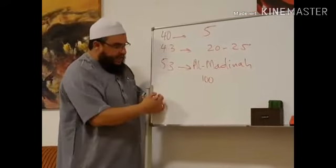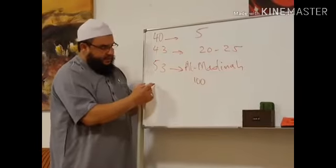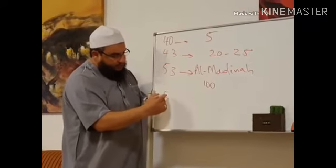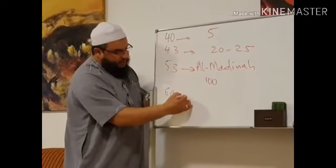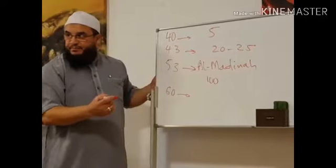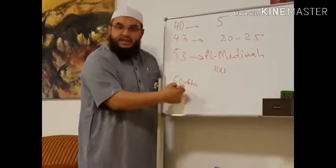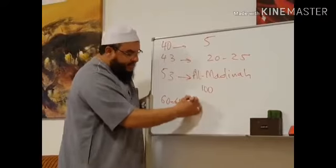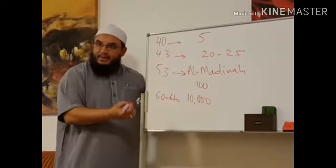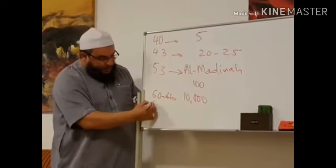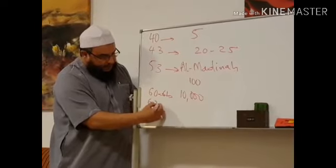Now in Medina, the number started growing. So at the age of 60, which is the opening of Makkah, 60 to 61, the number that entered with him into Makkah: 10,000. Look at the number when he went to the battle of Tabuk.